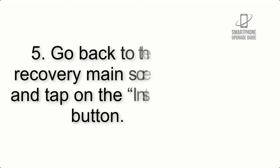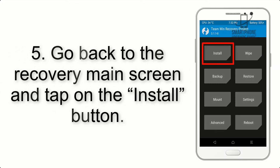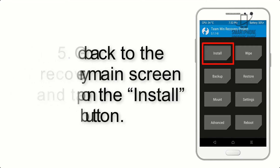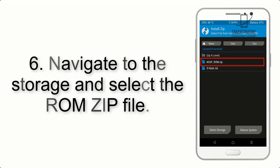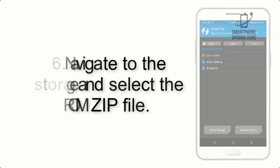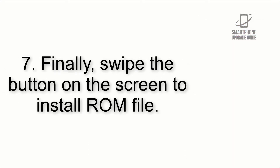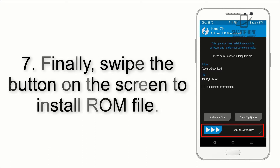Step 4: swipe the button to wipe the device. Step 5: go back to the recovery main screen and tap on the Install button. Step 6: navigate to the storage and select the ROM zip file.